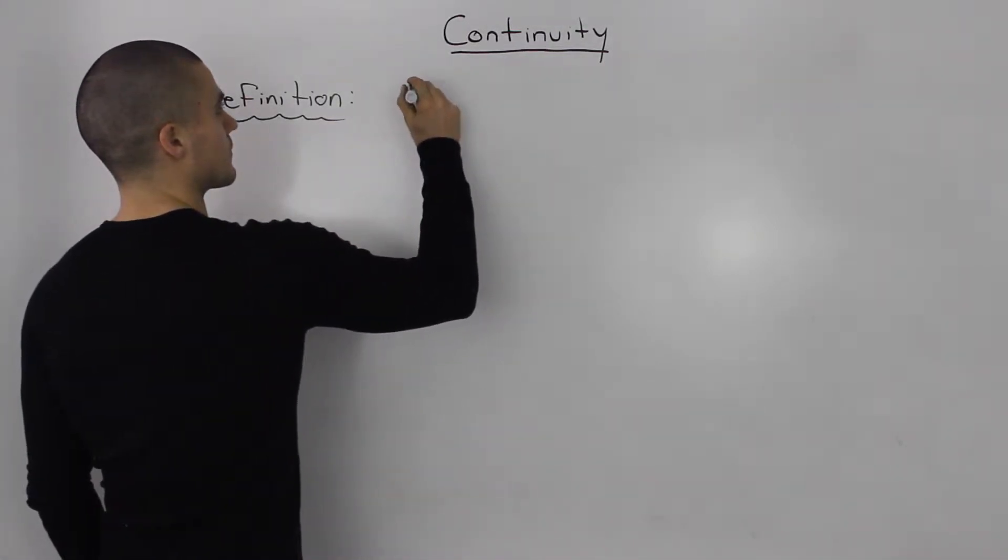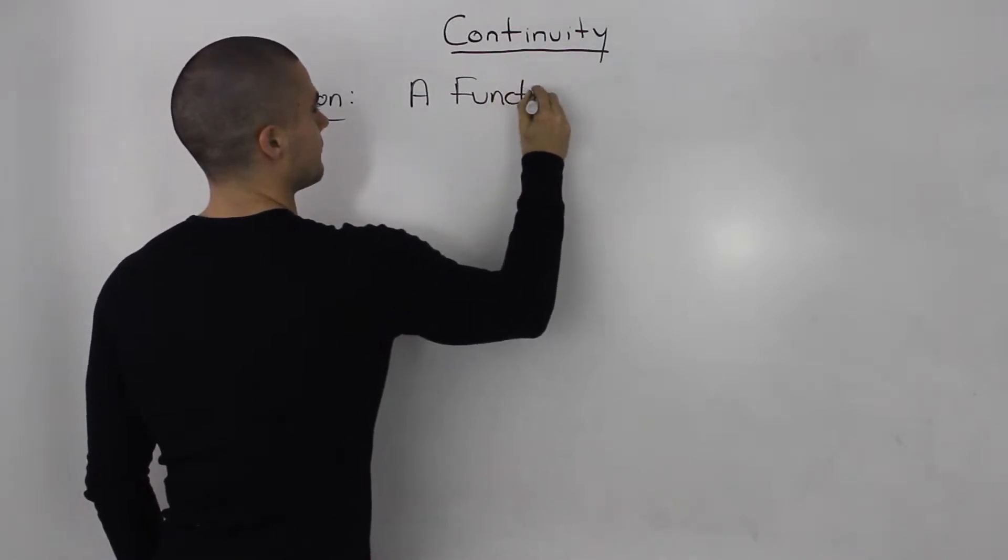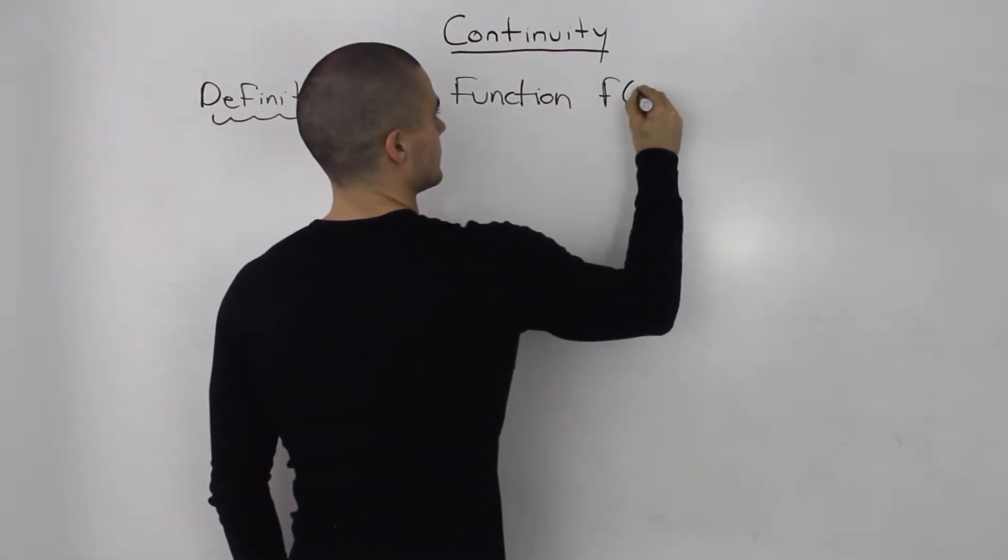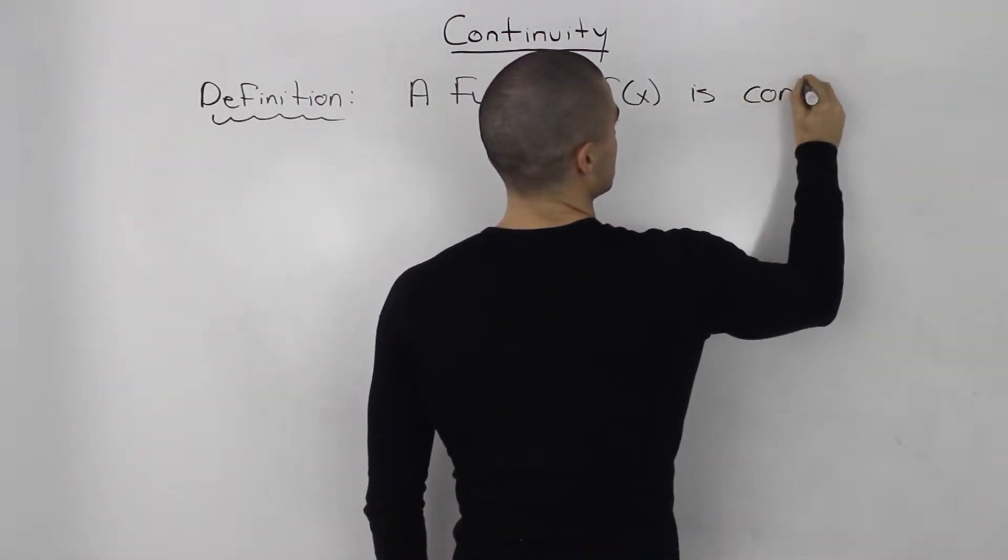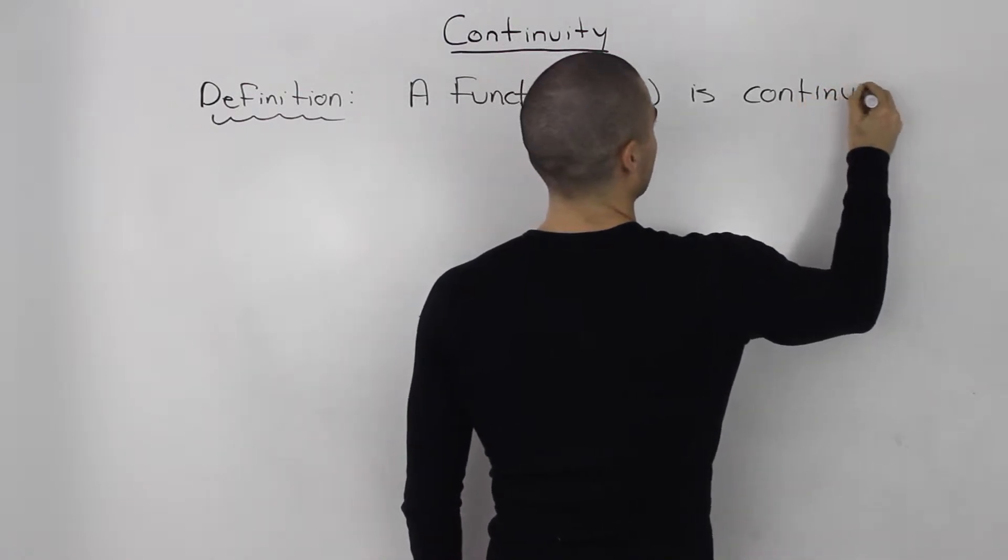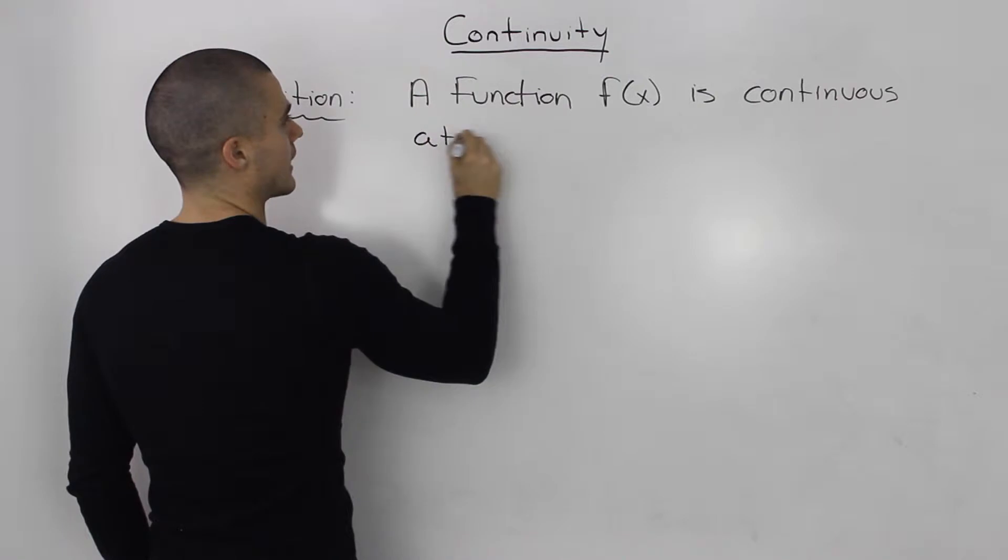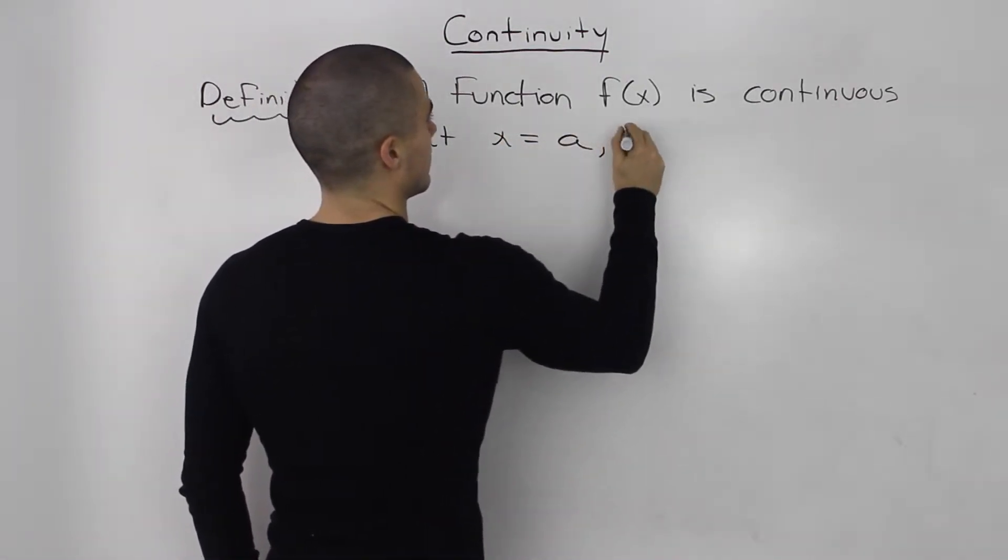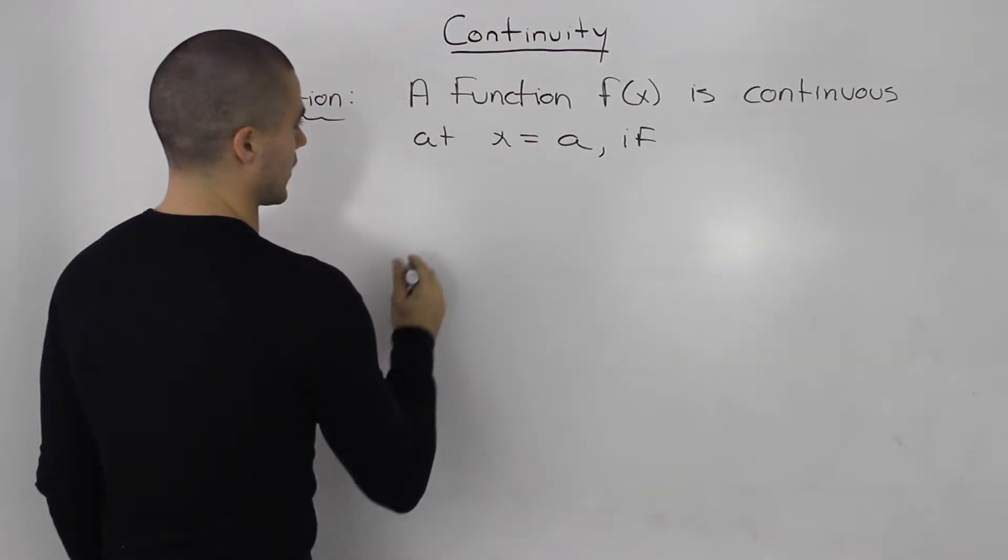A function f(x) is continuous at x = a if three conditions are met.